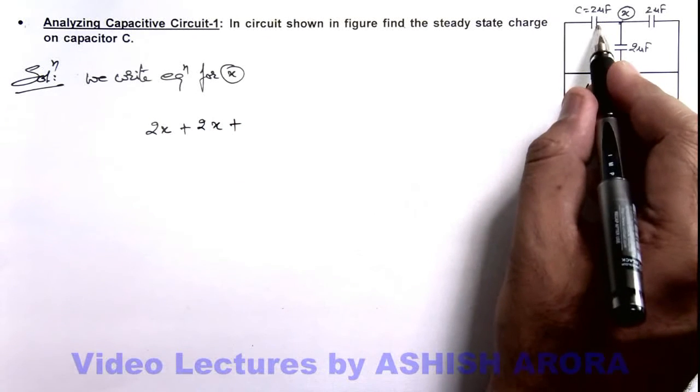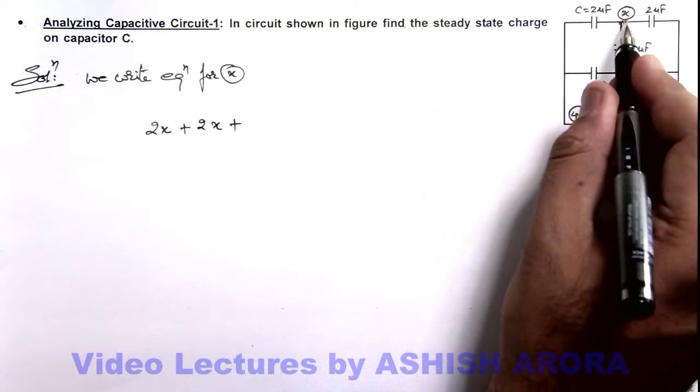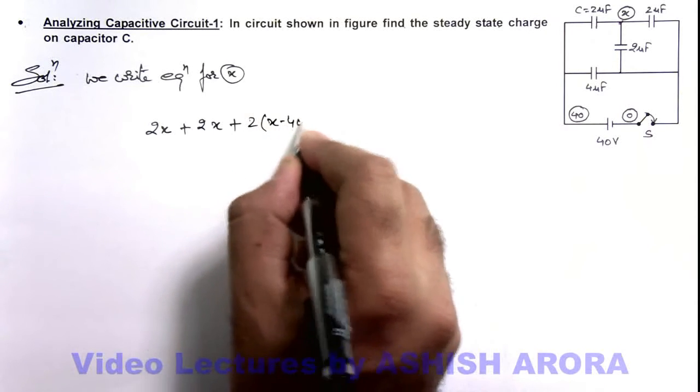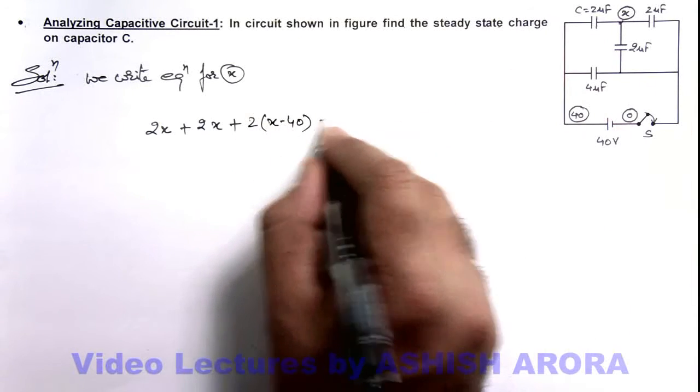Plus on this plate the potential will be 2 times (x minus 40). On the other side potential is 40 and this sum should be zero.